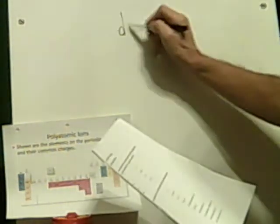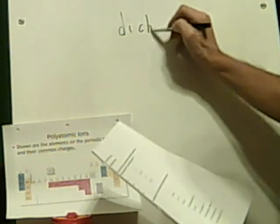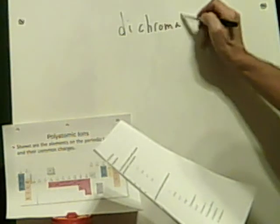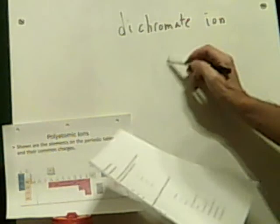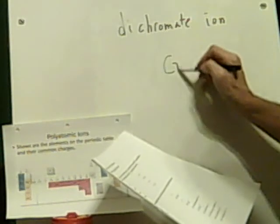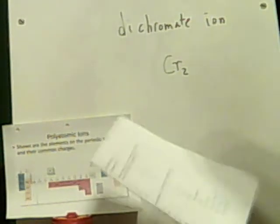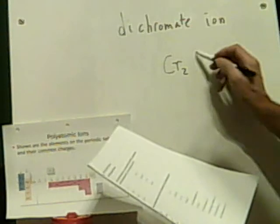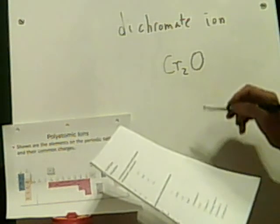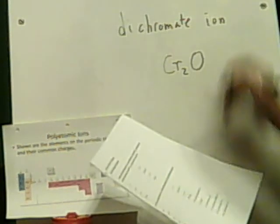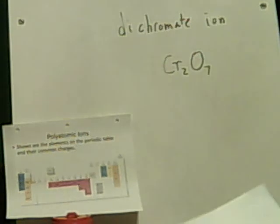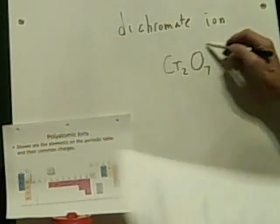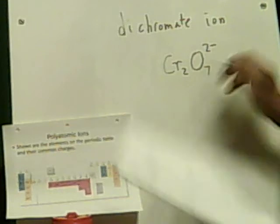Now, dichromate ion. The 'di' gives you a clue that there's going to be two of these. How many O's there are, I don't know. I think I saw the answer — it said seven. I noticed that while looking at the other answers. That's a 2 minus. I totally wouldn't have known that.